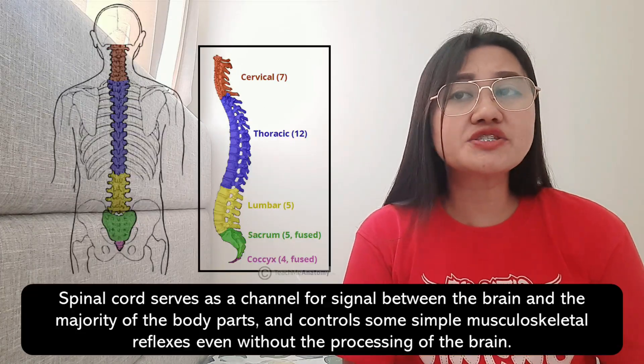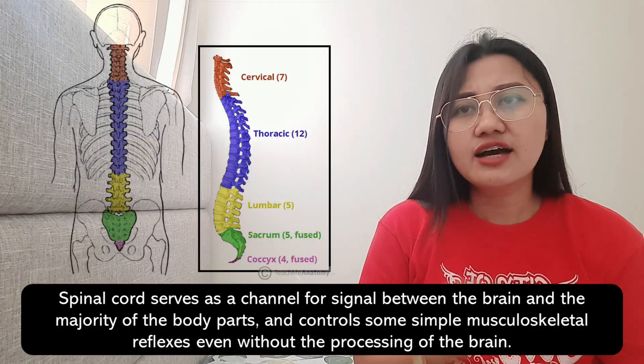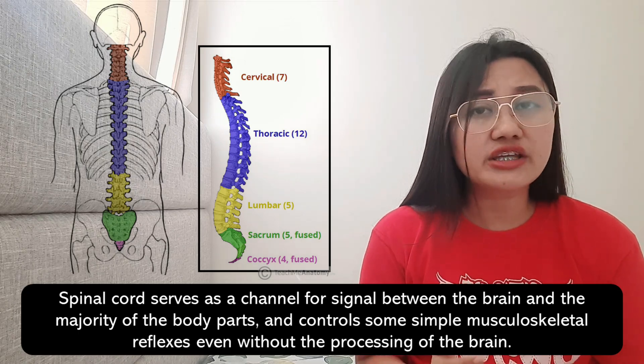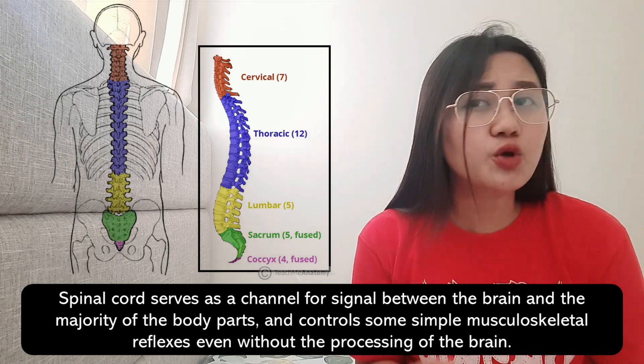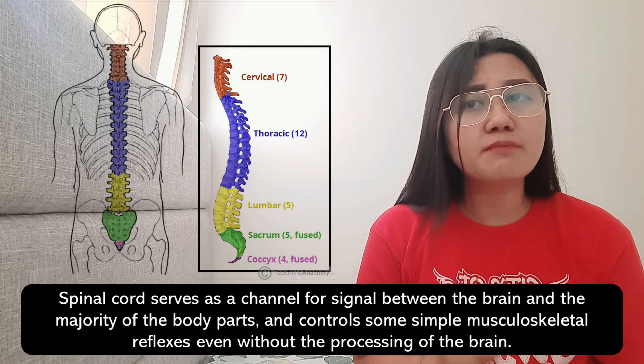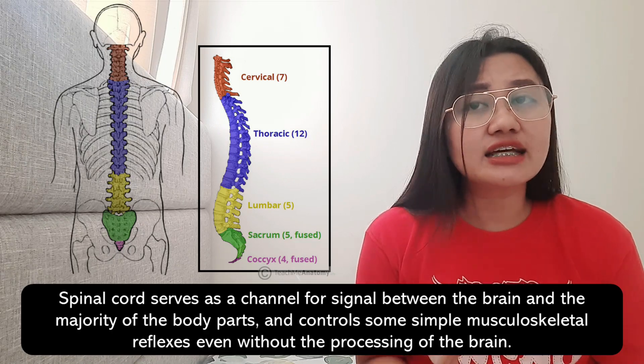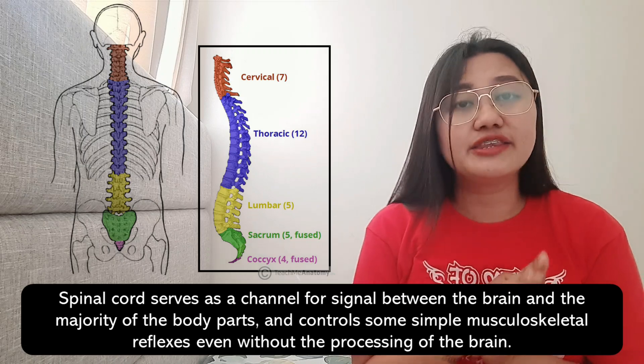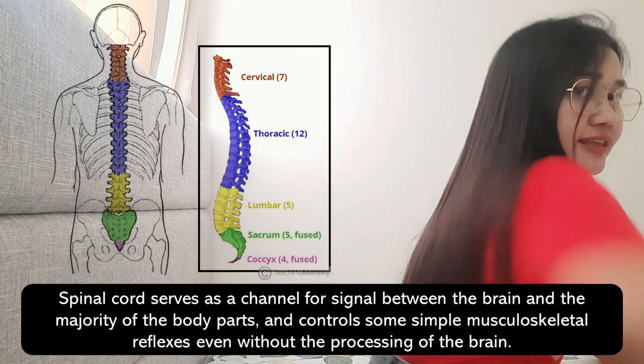Another part of the CNS is the spinal cord. The spinal cord serves as a channel for signals between the brain and the majority of the body parts. It also controls some simple musculoskeletal reflexes even without processing by the brain. That is our spinal cord, located along our back.